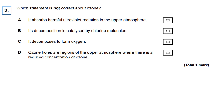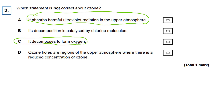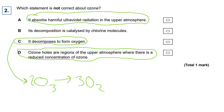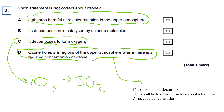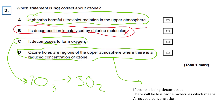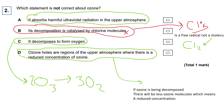Multiple choice question: which statement is not correct about ozone? A — it absorbs harmful ultraviolet radiation in the upper atmosphere. That is correct. C — it decomposes to form oxygen. Yes, we know that from the reactions. D — ozone holes are regions of the upper atmosphere where there is reduced concentration of ozone. That's also correct. So the answer is B — its decomposition is catalyzed by chlorine molecules. The incorrect word is 'molecules' — it's chlorine atoms or free radicals that break down ozone, not molecules.